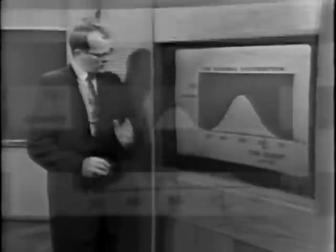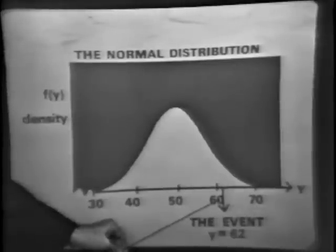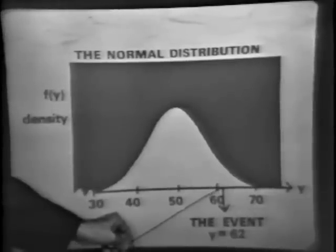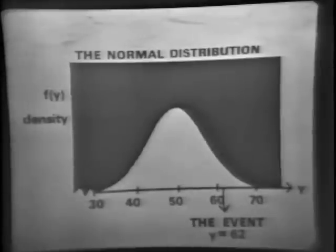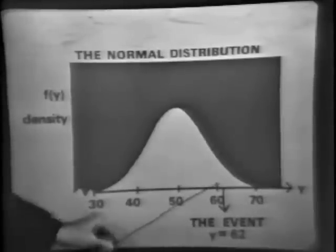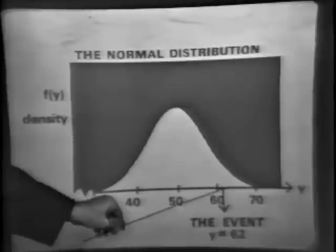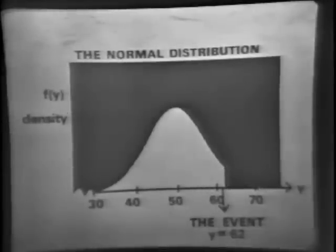Suppose someone comes to me and says, what's the probability that I'll get, randomly, an observation Y greater than or equal to 62? The event we're talking about is Y equals 62, and the question is what's the probability of this event and something more extraordinary? We find ourselves in a situation of determining the area under this curve from 62 all the way out to plus infinity — the shaded area under the curve as illustrated here. This is a rugged mathematical problem. We're going to have to integrate the normal probability density function from 62 all the way out to plus infinity and evaluate that definite integral.